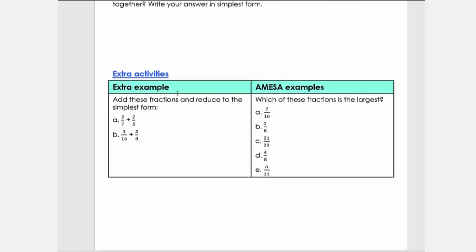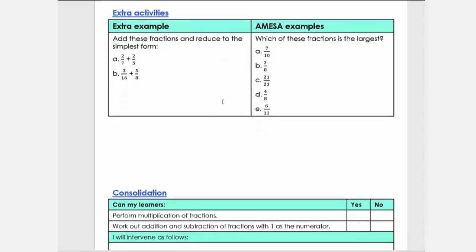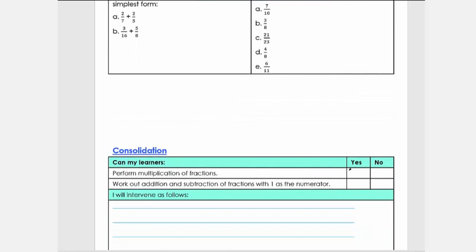Then the extra activities, the extra example, the MISA examples—I always recommend that you do these, because these are the type of questions that they usually ask in exam papers or test papers. Then we come to the consolidation where you're going to answer. If you answer yes, you can carry on to the next lesson. If you've got a no, you need to revisit, revise, or contact SAT teacher.